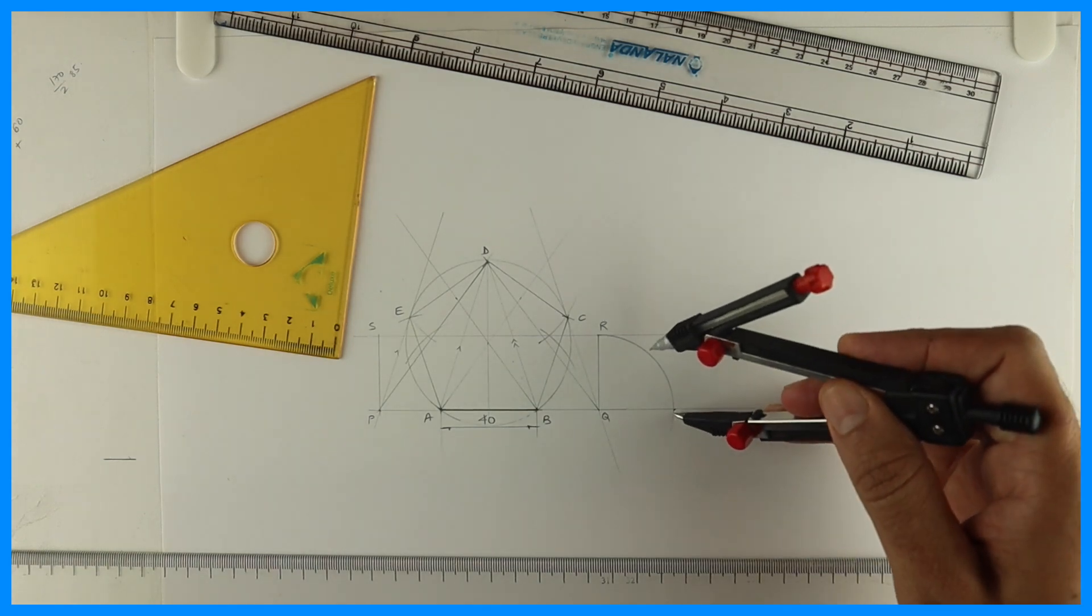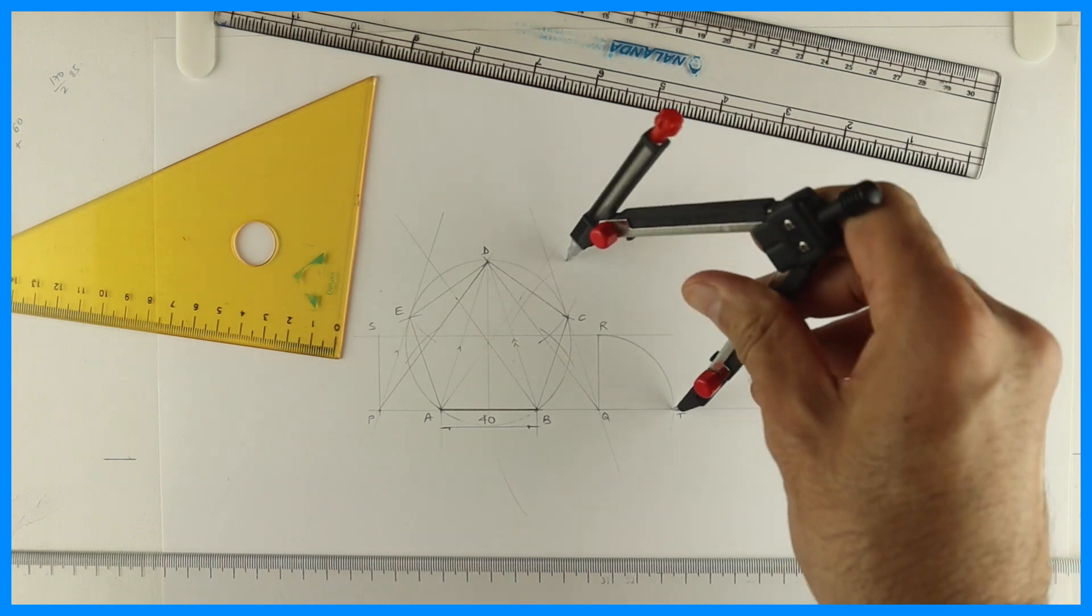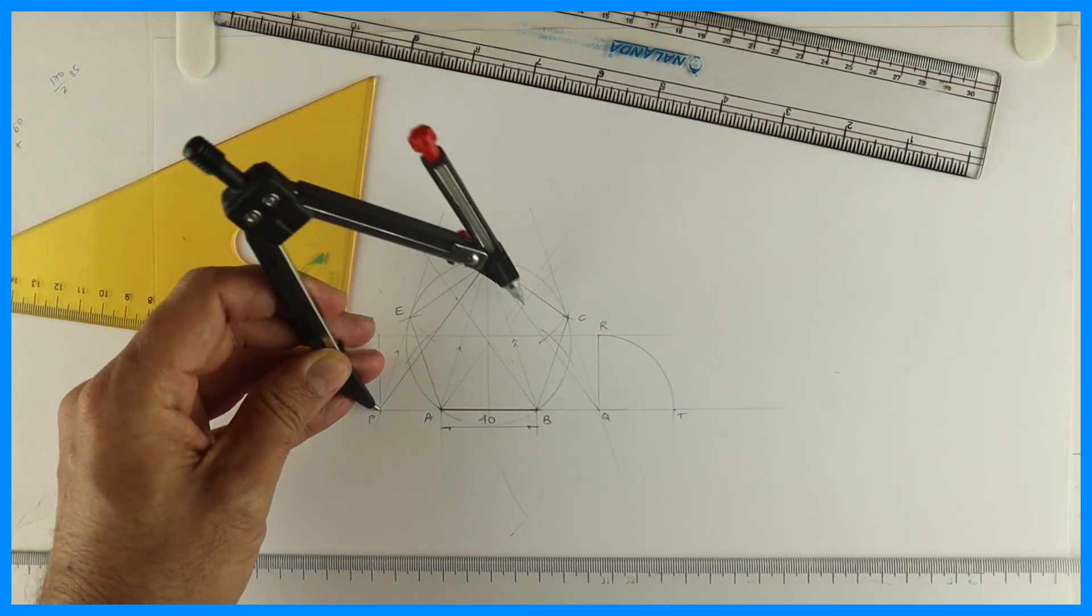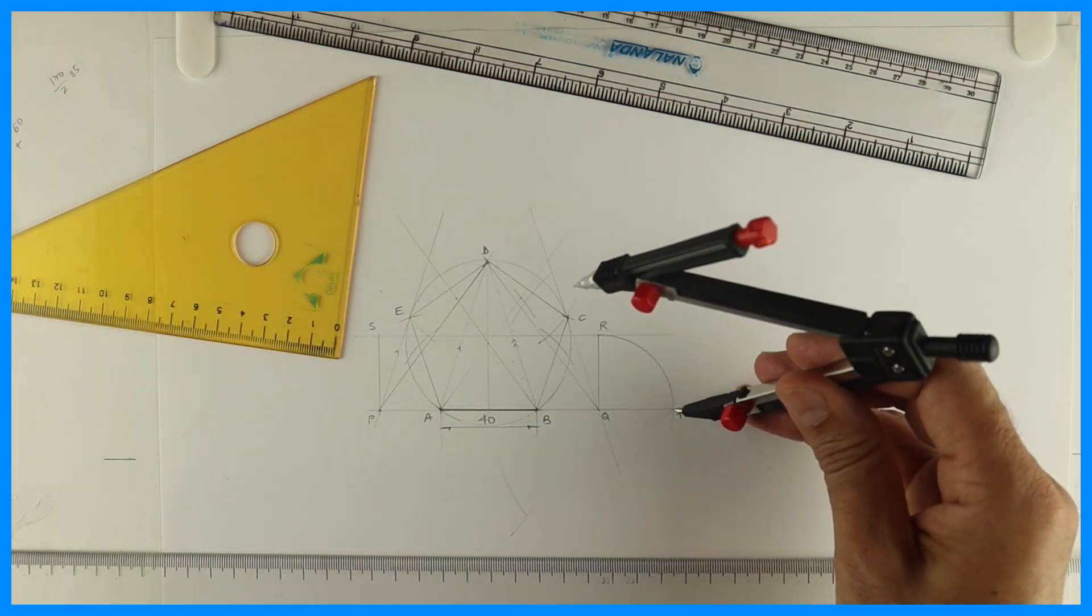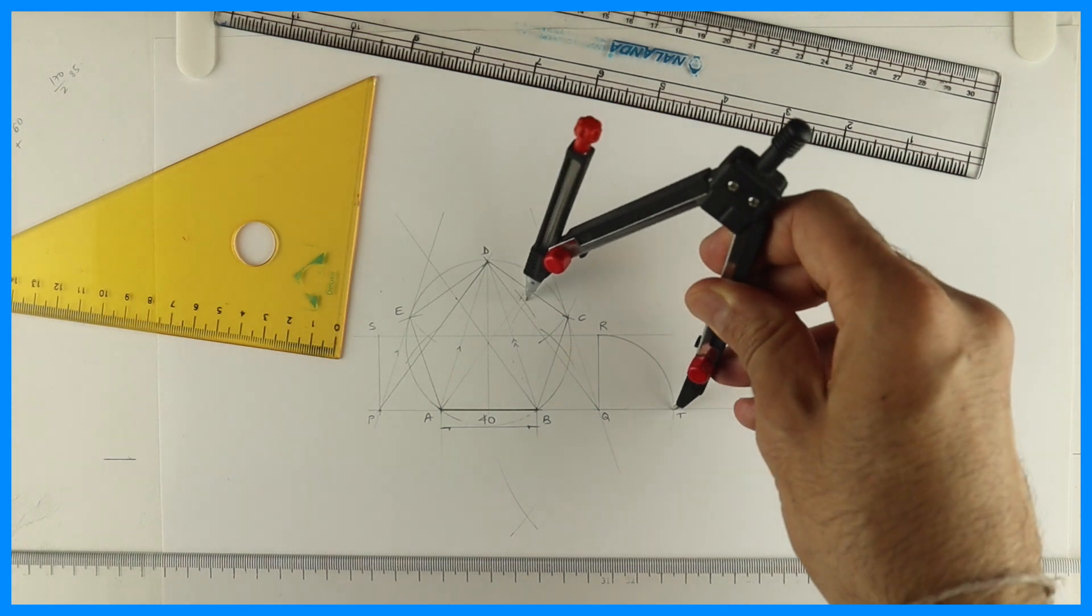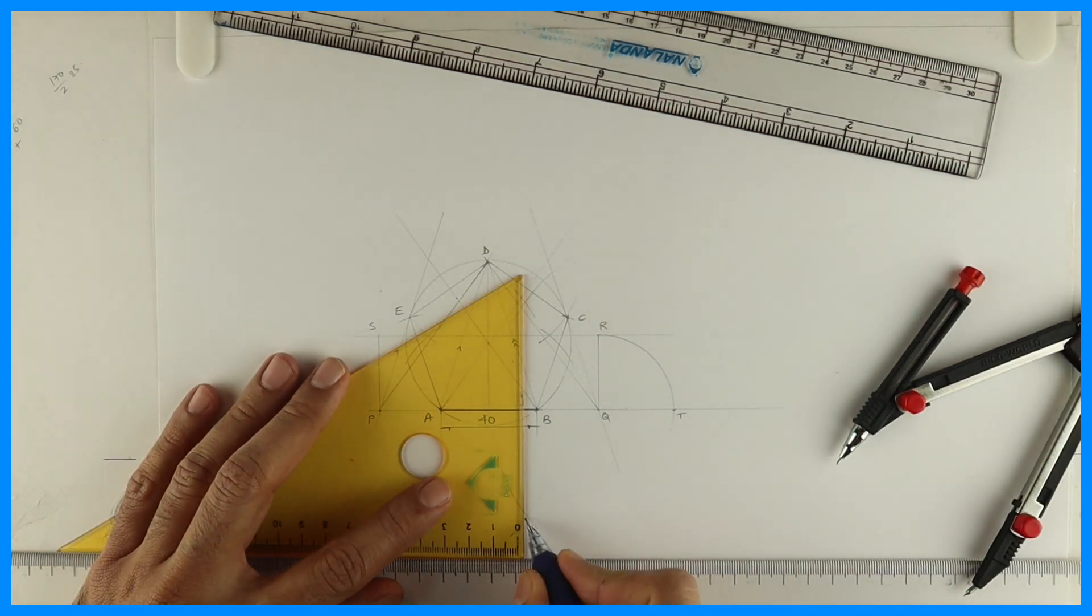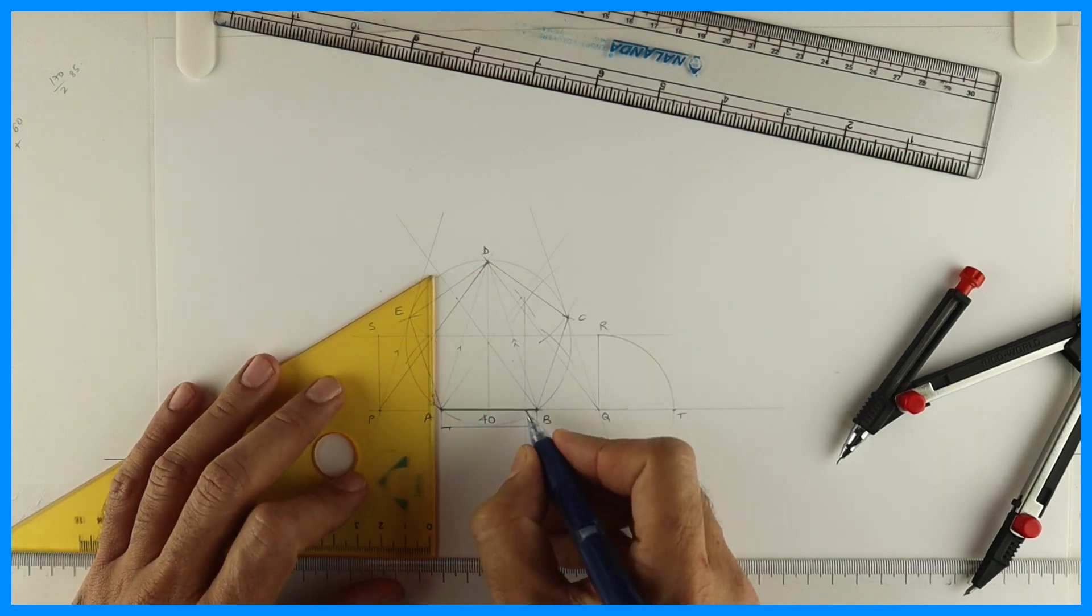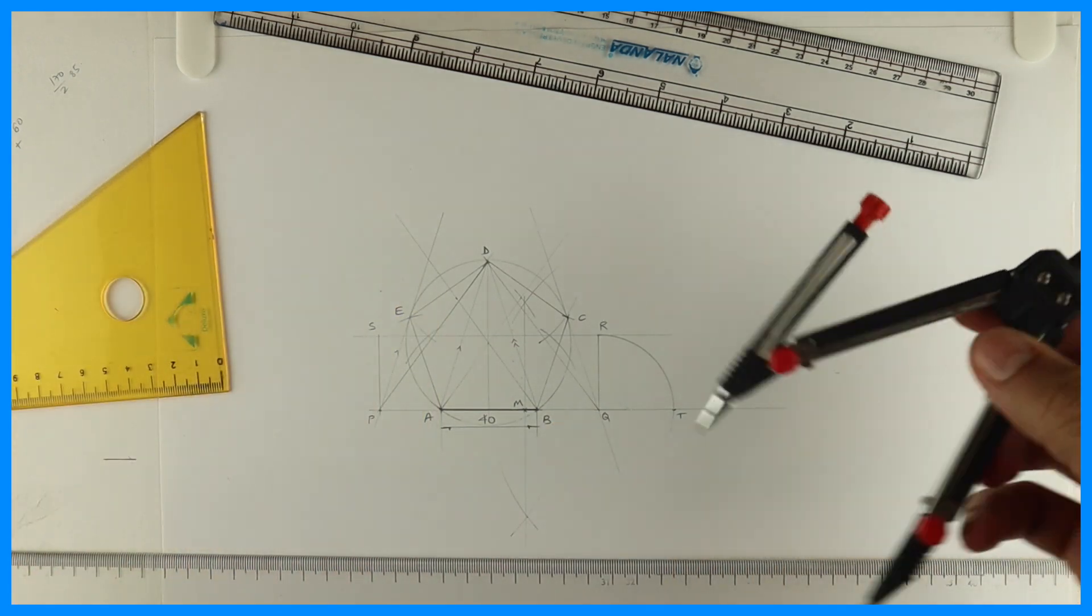How do you bisect line PT? From T you take more than half, cut down as well as up. From P also you do the same thing, maintain the same radius. After that you draw vertical line so you'll get midpoint that is M.